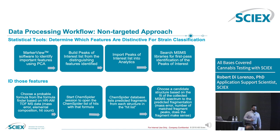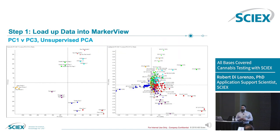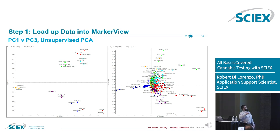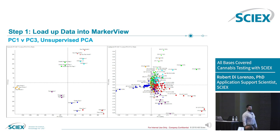What does this look like in practice? Plug your peak lists into our MarkerView software and you can see that all the different strains we were analyzing — Negra Bonita, Gorilla Glue, Double Sour OG — cluster together. That's what we'd expect; if they didn't cluster together, there was something wrong either with the analysis or the crop growth.